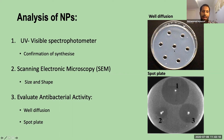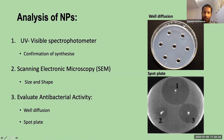In the well diffusion method, we make a hole in the agar, while in the spot plate we just drop the nanoparticles onto the surface of the agar.